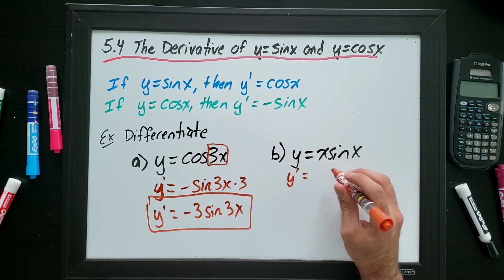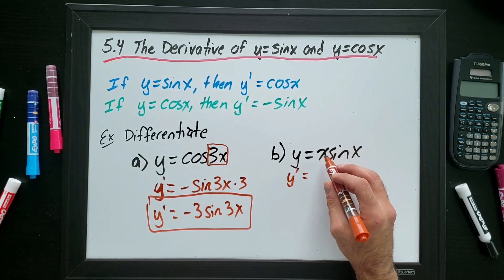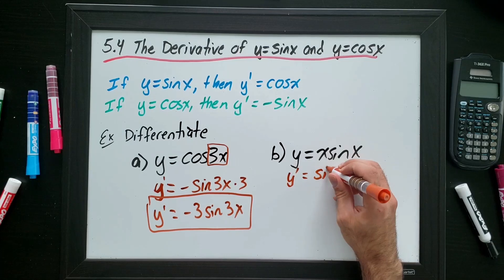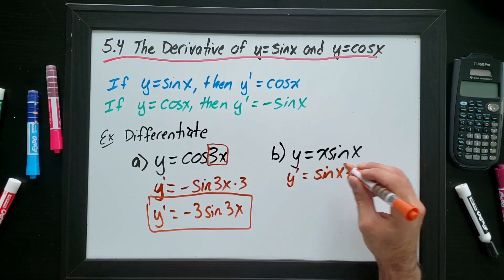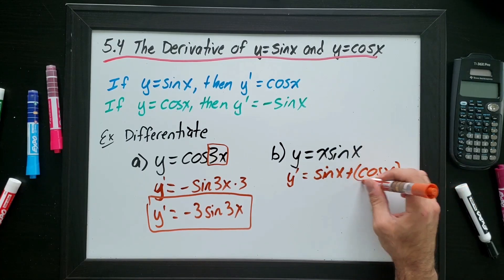So if I'm doing the first derivative, I have to do the derivative of the first thing, x. It's just 1 times the second, sine x, plus the derivative of this, cos x, times this, times x.